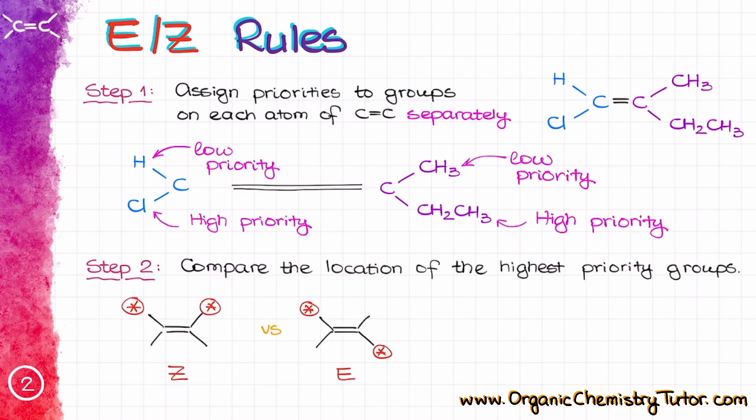Step number two. For that one, we are going to compare the relative orientation or the location of our highest priority group on each atom. If the highest priorities are on the same side, aka they're cis to each other, this is going to be a Z isomer. So what I have over here, I have this group and this group, and if those are the highest priority, that is going to be the Z isomer.